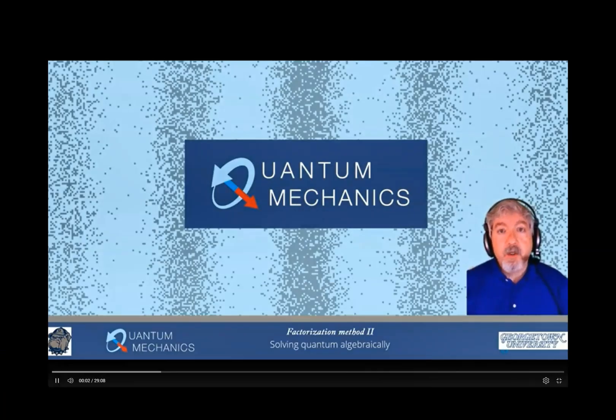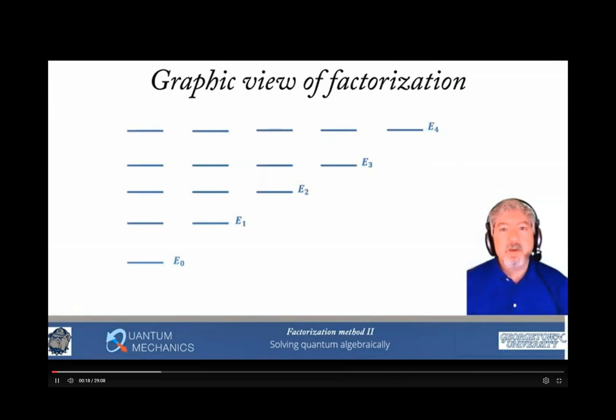Welcome to lecture four of module seven. This is our second lecture on the factorization method and how we solve quantum algebraically. We're going to be focusing on two concrete examples of how we apply the factorization method. Let me remind you graphically how we solve these problems. We start off with a Hamiltonian H0. That's the Hamiltonian we're interested in solving. We use a construction that then gives us a set of auxiliary Hamiltonians that we call H1, H2, H3, and so on. For each one of those Hamiltonians, we find the ground state. We have the ground state of our initial problem. That comes from a subsidiary condition of A0 acting on psi 0 equals 0, and we get similar ground states for each of our auxiliary Hamiltonians.